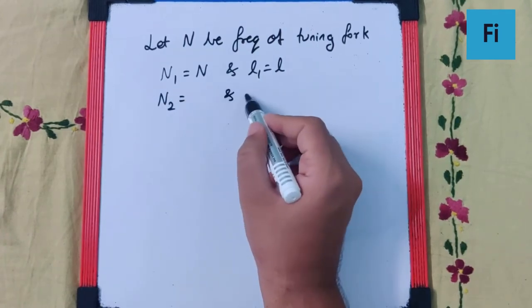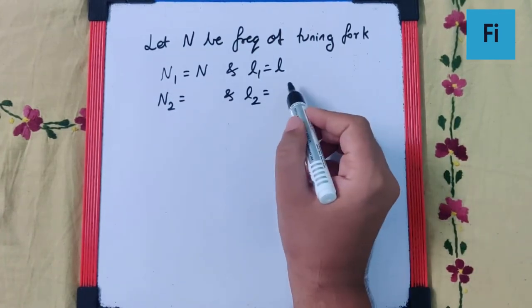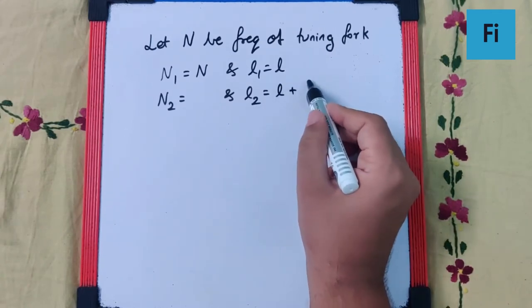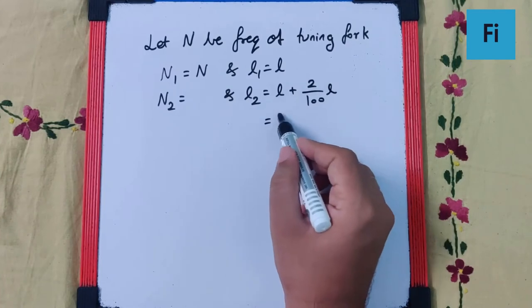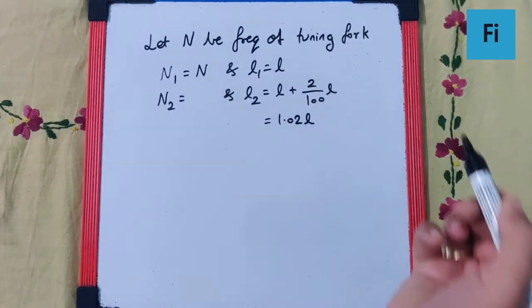they say the length has increased by 2%, so L plus 2% of L, that's like 1.02L. So length has increased by 2%.